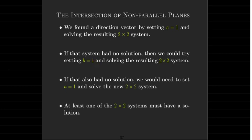So not all of these three could be 0. So at least one of them has to be non-zero. So one of those 2 by 2 systems will have a unique solution.